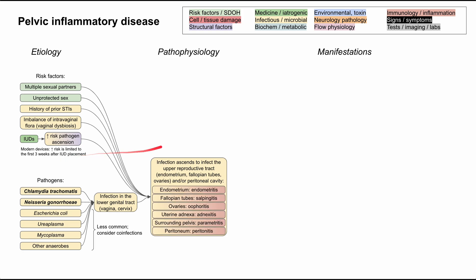When the infection ascends into the upper reproductive tract, the corresponding inflammation in each structure has a specific name. If the infection goes up to the endometrium, you can have endometritis. If it goes up to the fallopian tubes, you can have salpingitis. In the ovaries, you could have oophoritis. In the uterine adnexa, you can have adnexitis. In the surrounding pelvis, you can have parametritis. In the peritoneum, you can have peritonitis.